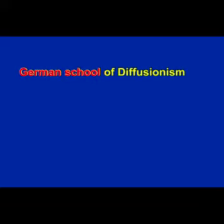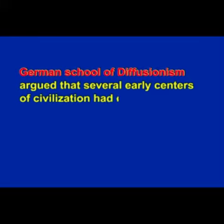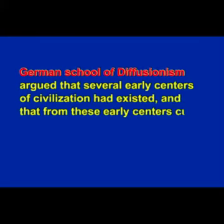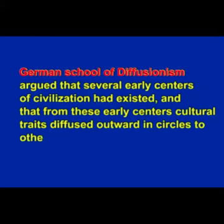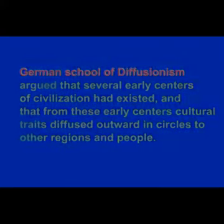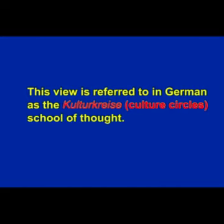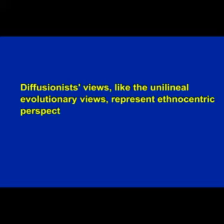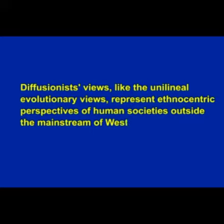The German school of diffusionism differed somewhat from that of the British. They argued that several early centers of civilization had existed and that from these early centers, cultural traits diffused outward in circles to other regions and peoples. This view is referred to in German as the Kulturkreise, or culture circles school of thought. In examining why some primitive societies did not have the characteristics of civilization, the German school, like the British diffusionists, argued that these people had simply degenerated. Thus, diffusionists' views, like the unilineal evolutionary views, represent ethnocentric perspectives of human societies outside the mainstream of Western civilization.